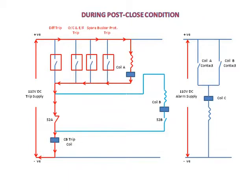During post-close condition, the flow of current will be as shown — coil A will be in pickup condition. Since coil A is picked up, coil A closes its contact, and coil C will also pick up.